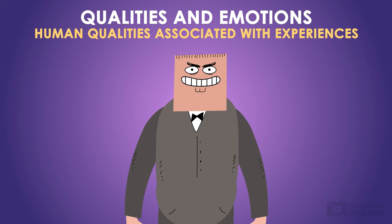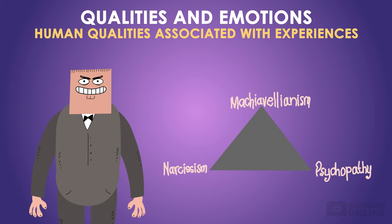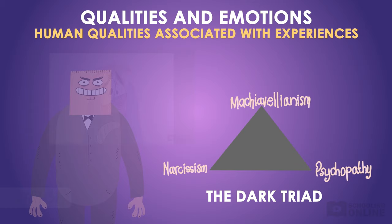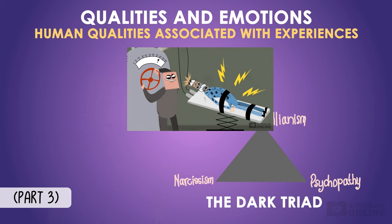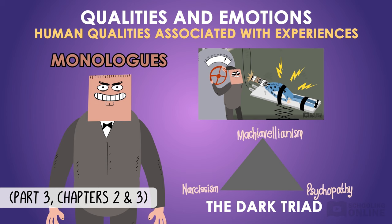Another good example is the character of O'Brien. His human qualities of Machiavellianism, narcissism and psychopathy — known as the dark triad — are associated with his experience of torturing Winston in Part 3 of the novel. Have a look at some of O'Brien's monologues, or extended speeches, in Part 3, chapters two and three. Identify and analyse some key sentences or phrases that represent his dark triad of human qualities — there's a lot to choose from.